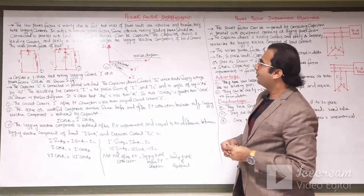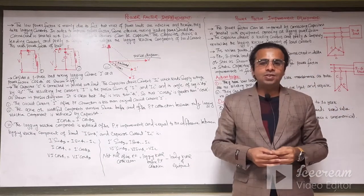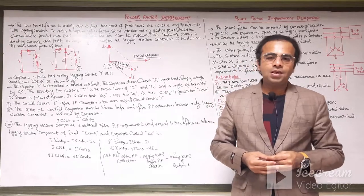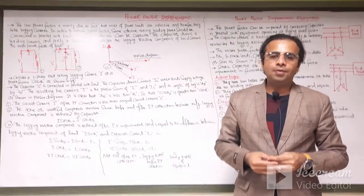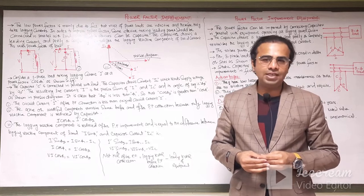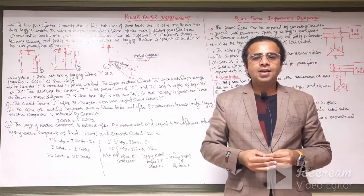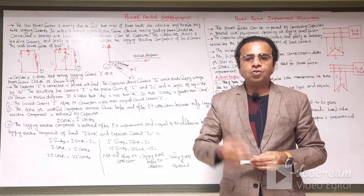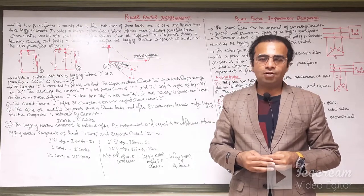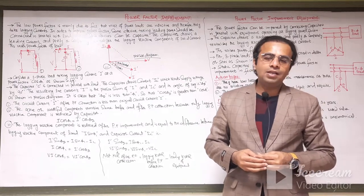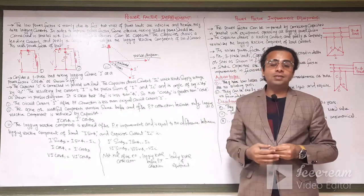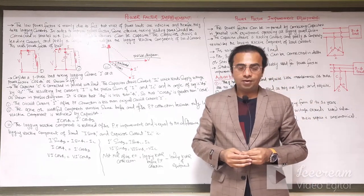The power factor is an essential topic in our electrical power systems. It can be defined as the cosine of the angle between the voltage and current — cosine phi — or it is the ratio of active power to apparent power, KW over KVA. It is also the ratio of resistance over impedance.